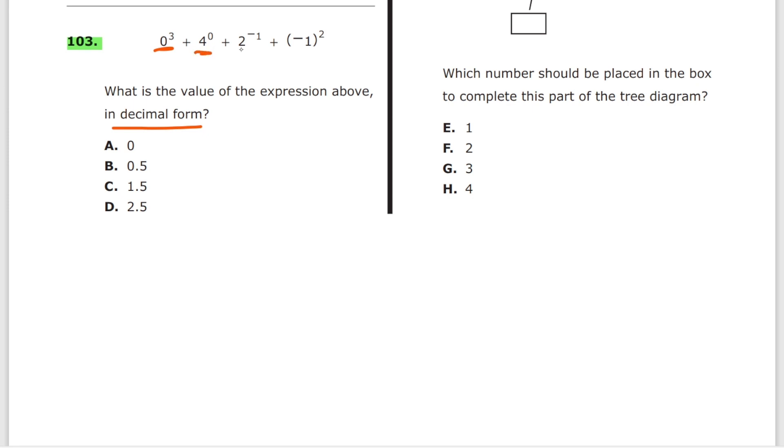So we got a couple of complicated ones here. This is complicated, this is complicated, this is complicated, and this is complicated. All three are complicated. But if you know your exponent rules, it's all easy. So let's go one by one. Zero to the third power is just zero times zero times zero. It's just zero. Okay.